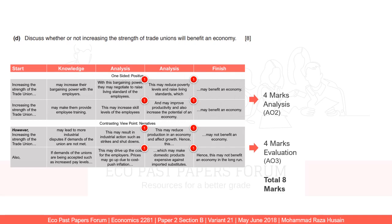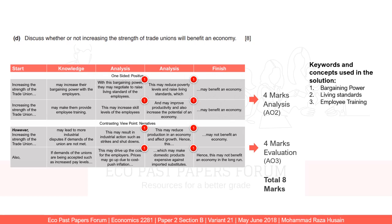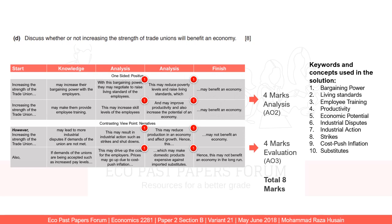So with four marks for analysis and four marks for evaluation, I would expect a total of eight marks. You don't have to use exactly these points — use any concept you're comfortable with — but this structured approach gives you a higher chance of scoring well. The keywords and concepts used in this solution are: bargaining power, living standards, employee training, productivity, economic potential, industrial disputes, industrial action, strikes, cost-push inflation, and substitutes. It is beneficial to know the meaning of these key terms before using them. Refer to your textbook, an economic dictionary, or ask in the comments.